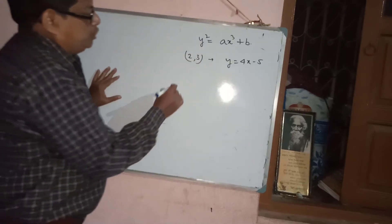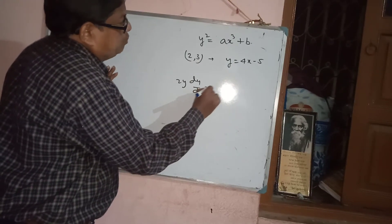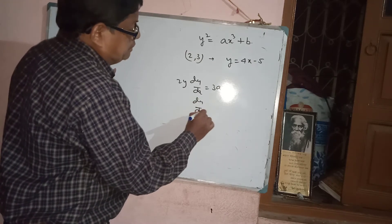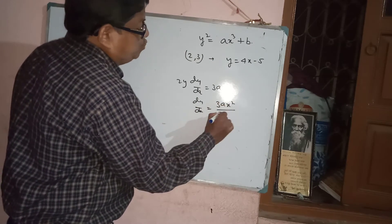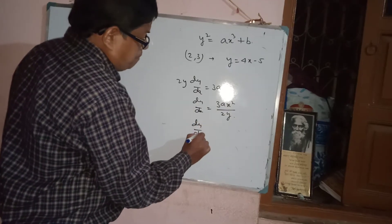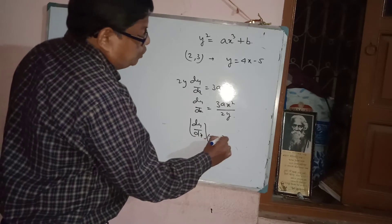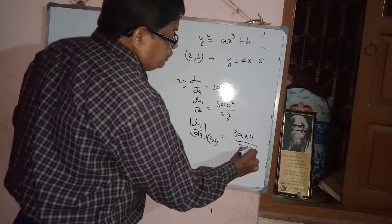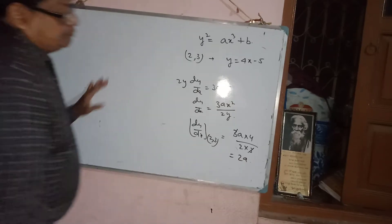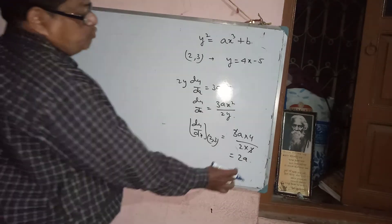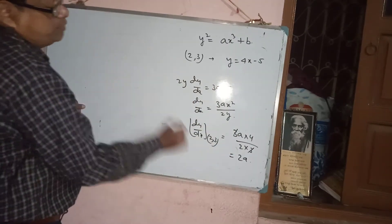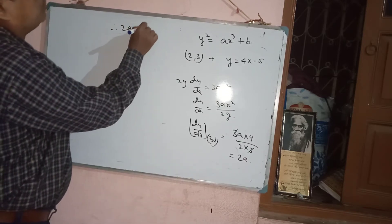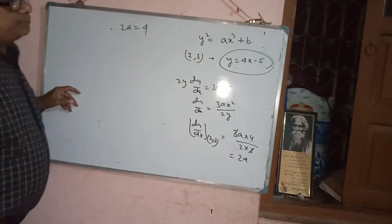So dy/dx at (2, 3) = 3A × 4 / (2 × 3) = 12A/6 = 2A. Since the tangent is y = 4x - 5, the gradient m = 4. Therefore 2A = 4, giving A = 2.